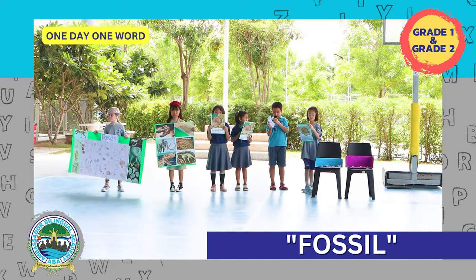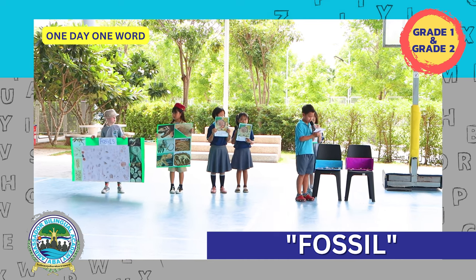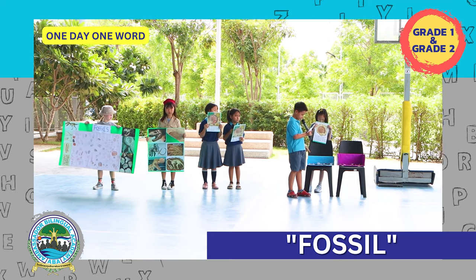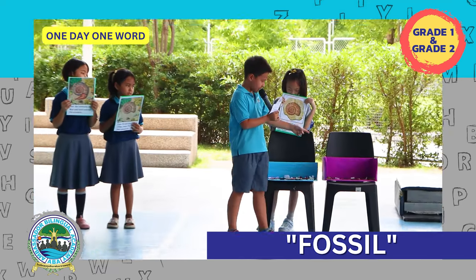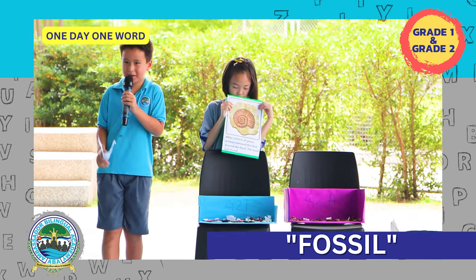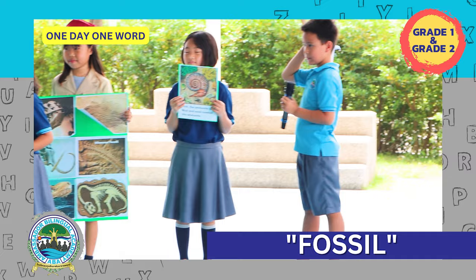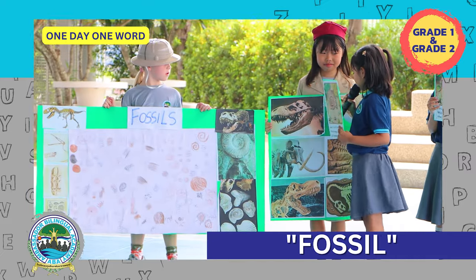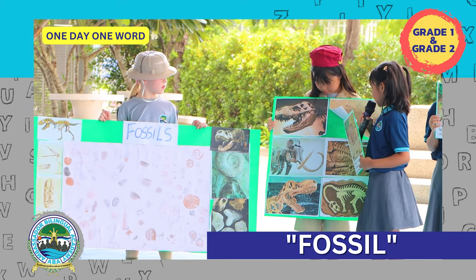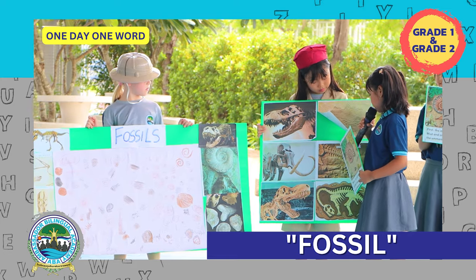Let me show you the diorama. These are the clay models of fossils that Grade 2 made. There are fossils of dinosaurs, fern, fish, ammonite, and lots more. This is the drawing we drew. This is a fossil of a dinosaur, a fossil of a fish, a fossil of a woolly mammoth, and a dinosaur fossil.